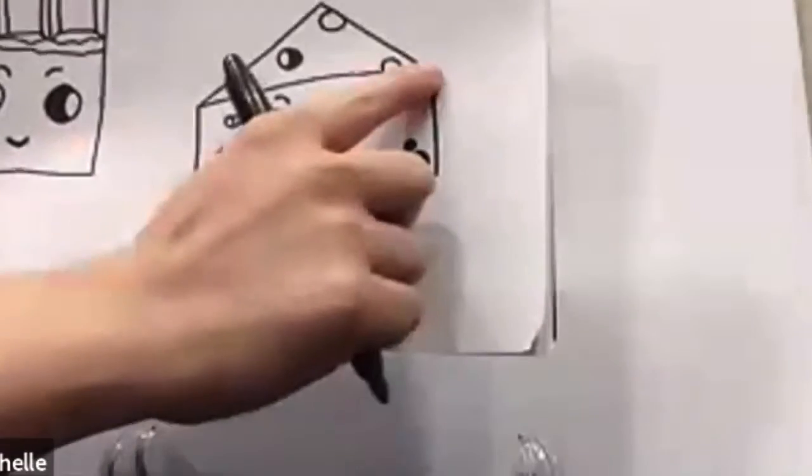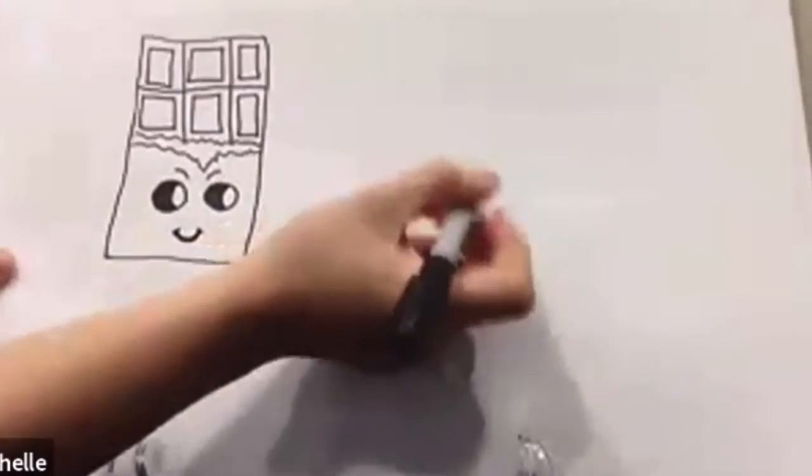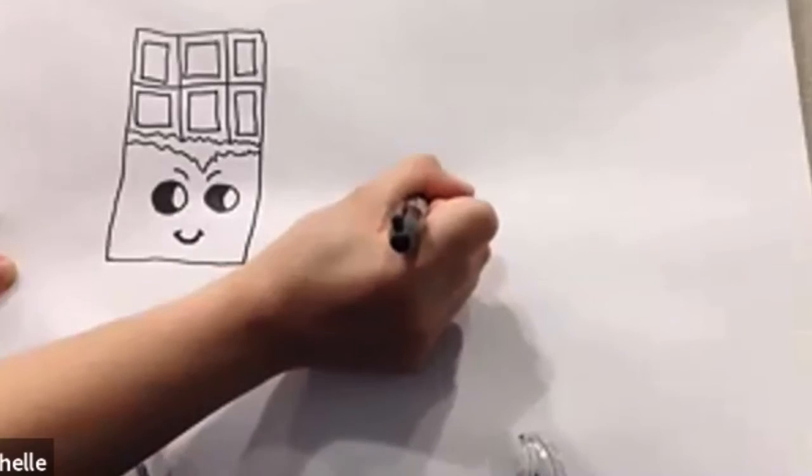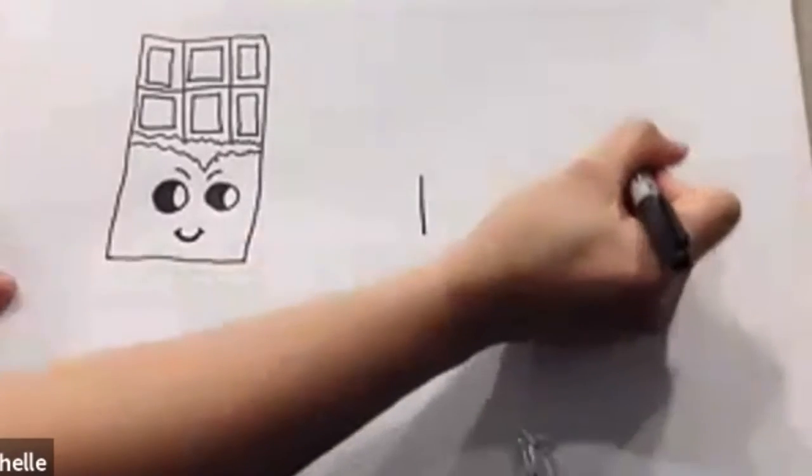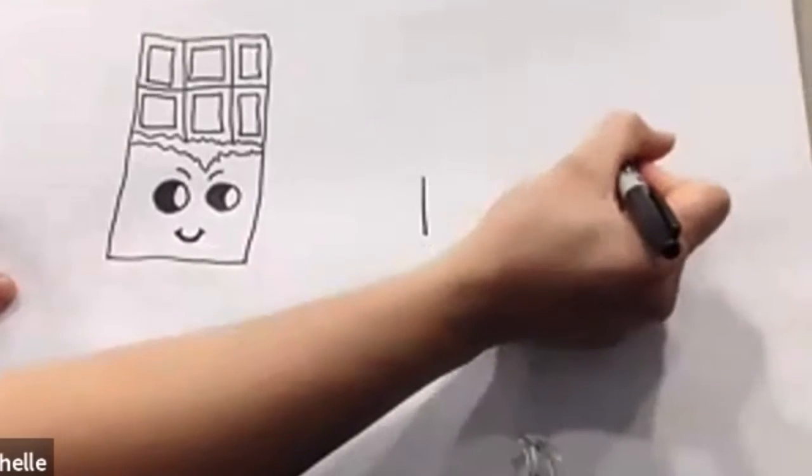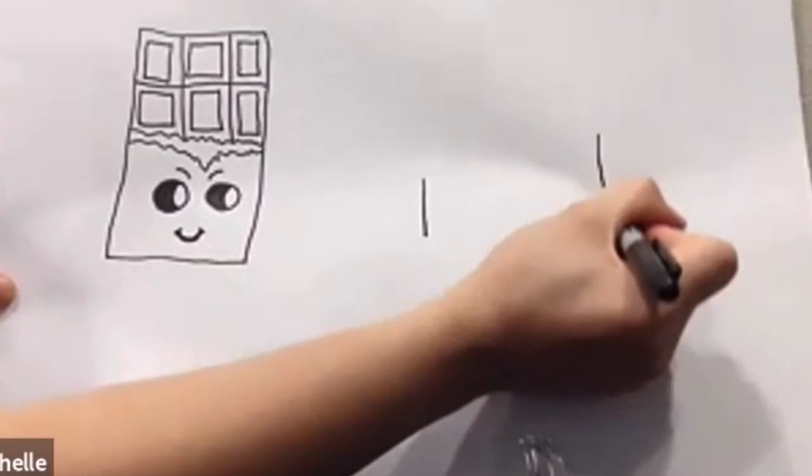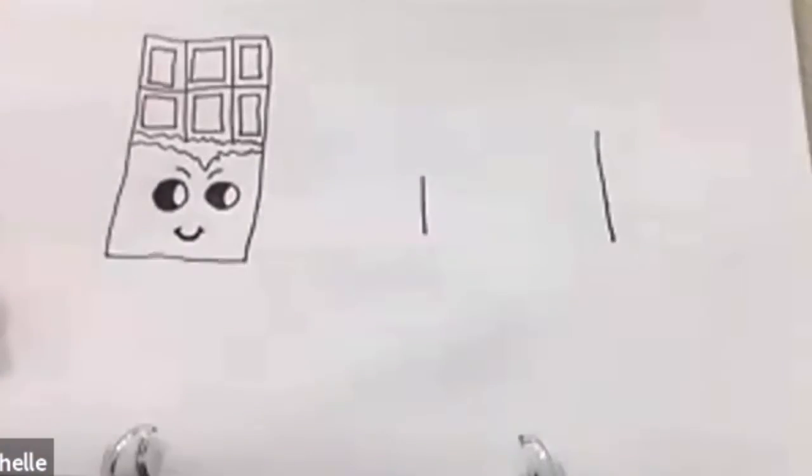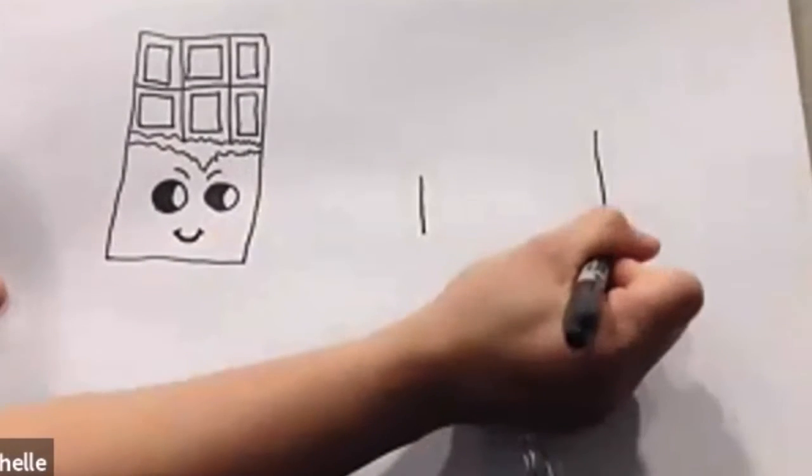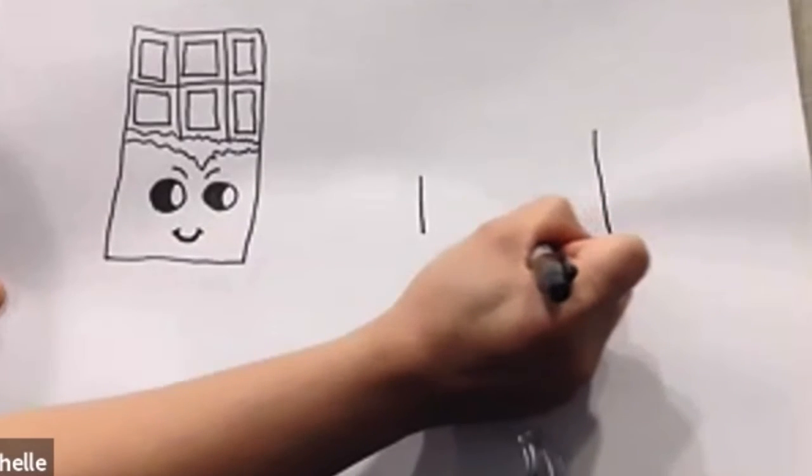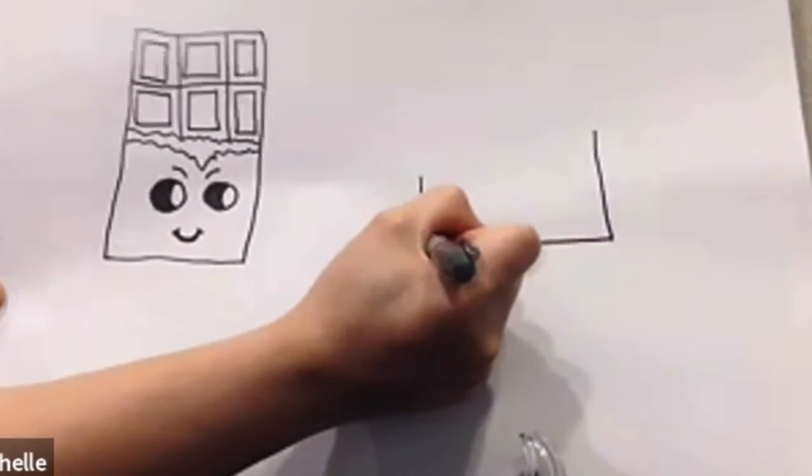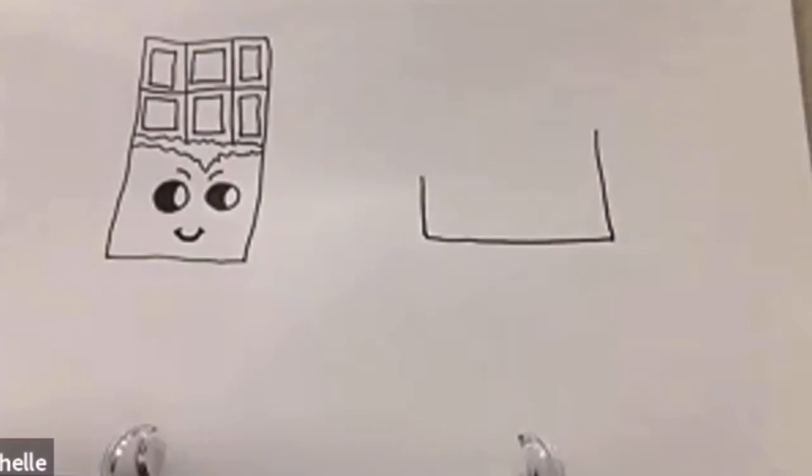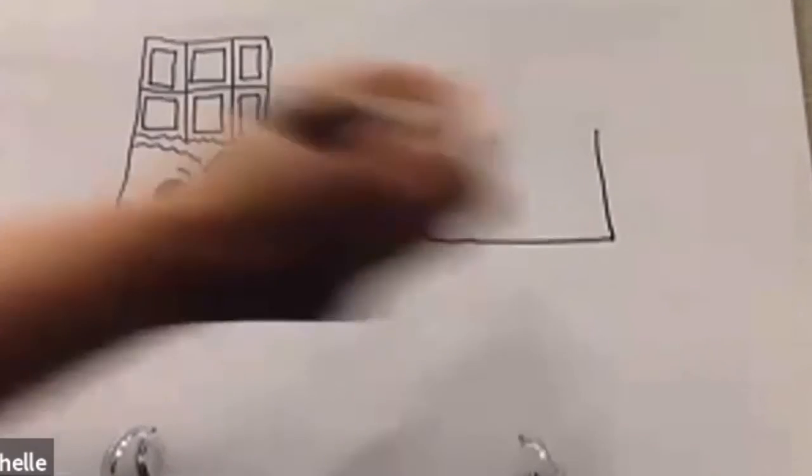So first we're gonna do these vertical lines. One small vertical line right here, a small one, and a longer one right about here. Then we can go ahead and connect them together.